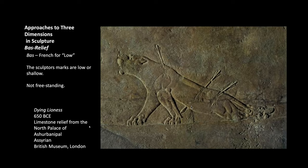We're going to talk about relief sculpture first, because like painting and drawing, it usually exists on a flat surface — typically a wall, or a slab that you can stick on a wall. There are two types of relief sculpture. The one we're looking at now is called bas-relief, where 'bas' is French for 'low,' so it means low relief. You're carving into a stone wall — in this case limestone, which is a pretty soft stone and very easy to carve — to create an image.